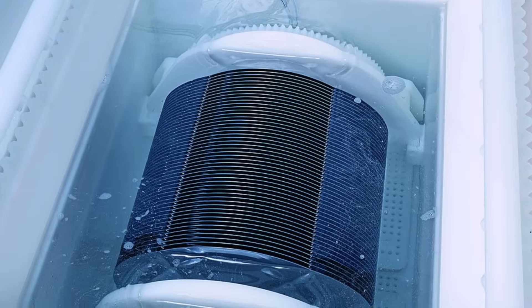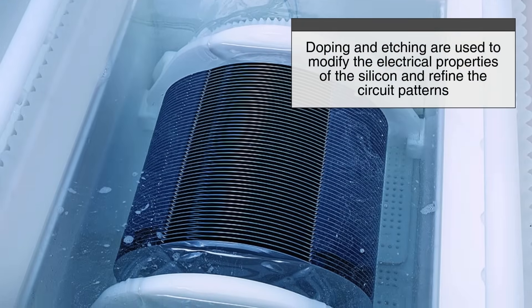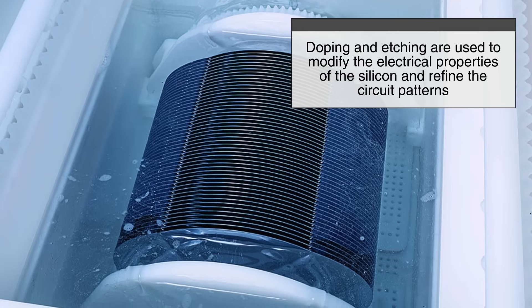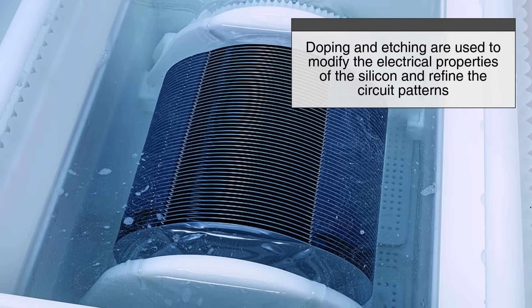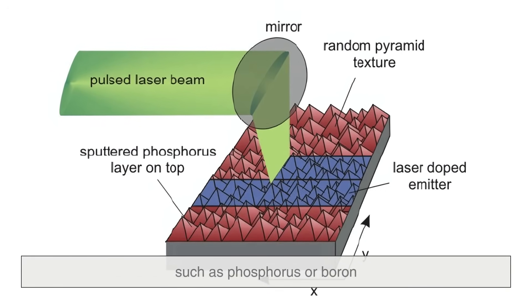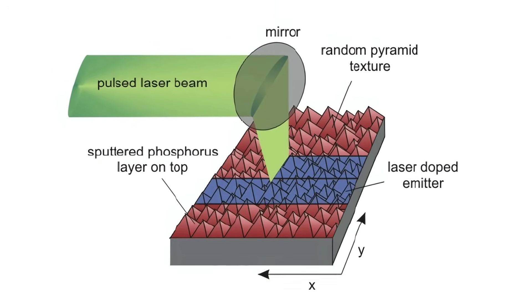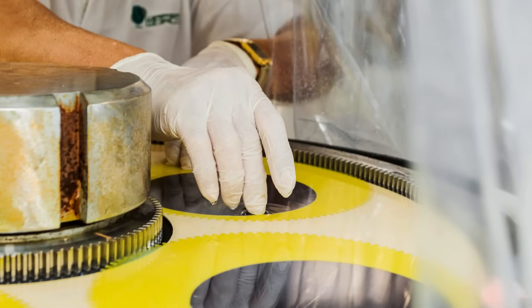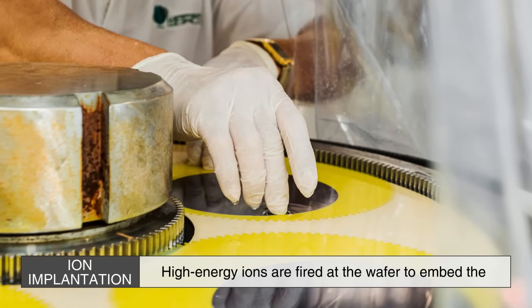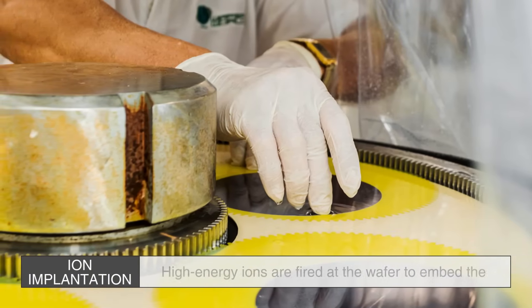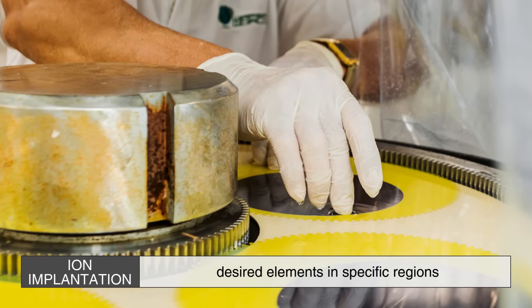After photolithography, doping and etching are used to modify the electrical properties of the silicon and refine the circuit patterns. Doping is the process of introducing impurities, such as phosphorus or boron, into the silicon wafer to alter its conductivity. This is done using ion implantation, where high-energy ions are fired at the wafer to embed the desired elements in specific regions.